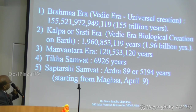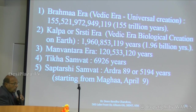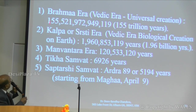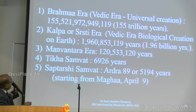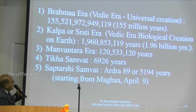Coming to the summary of Indian calculations of other eras: Brahma era, as we showed, is 15 trillion plus years. One Kalp is 1.96 billion years. Manvantara era is 120 plus years. Tikha Sammat: 6,926. Shapt Rishi Sammat: 89 or 5,194 years, starting from April 9th.